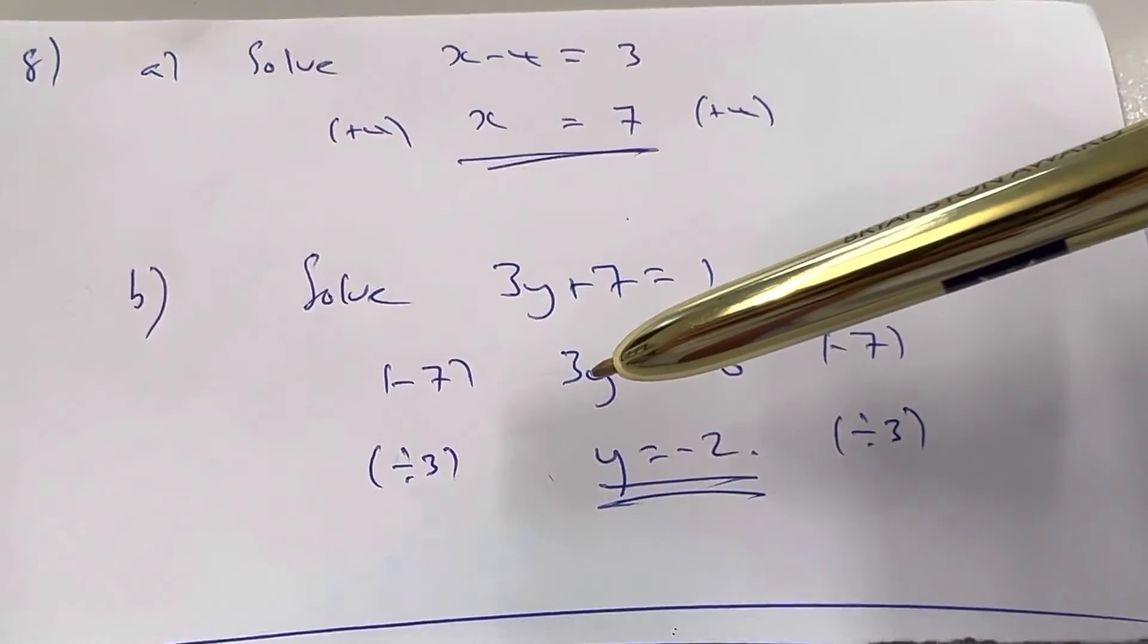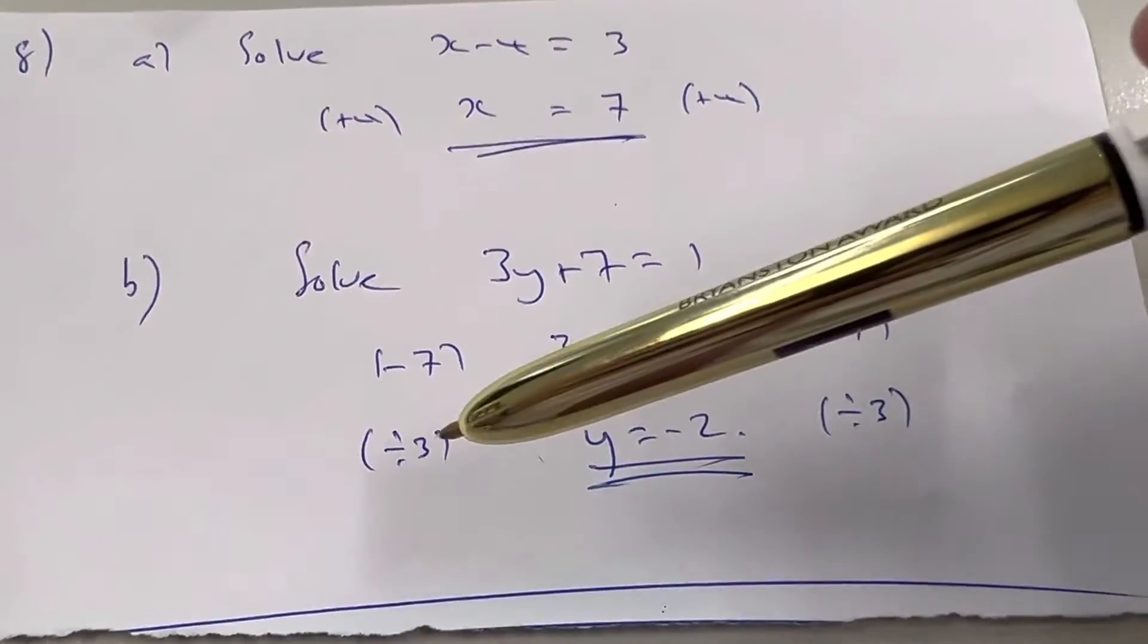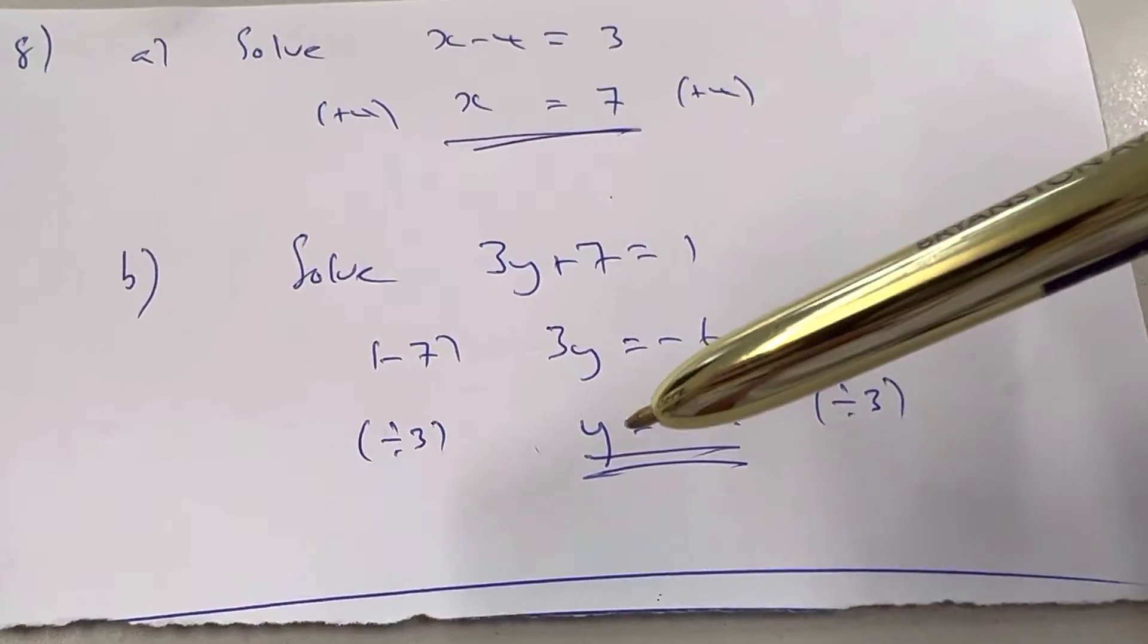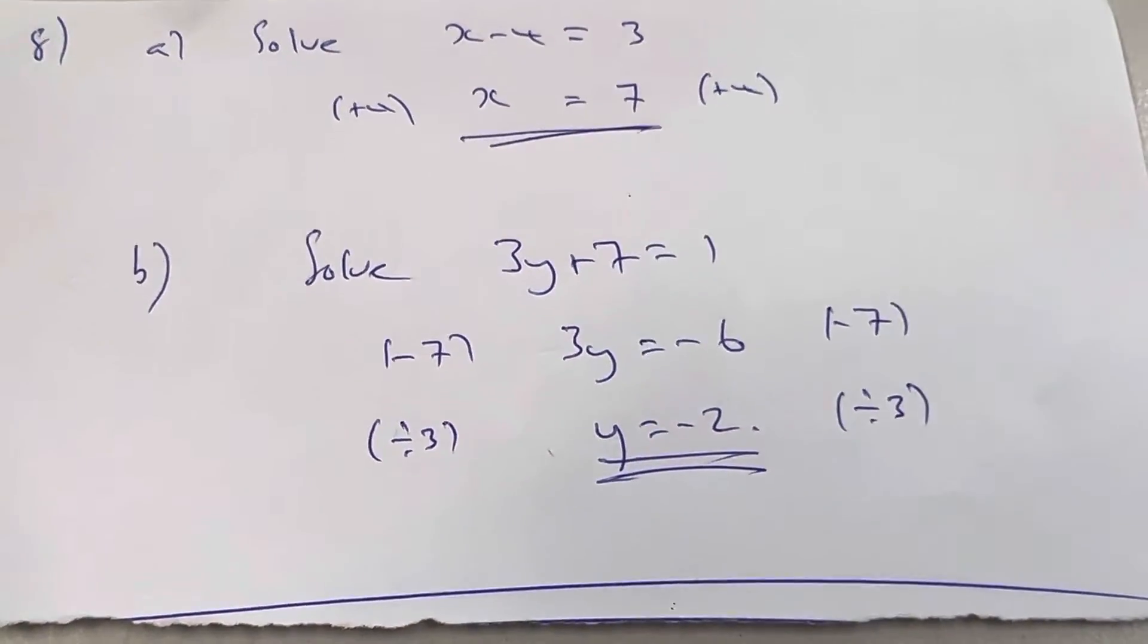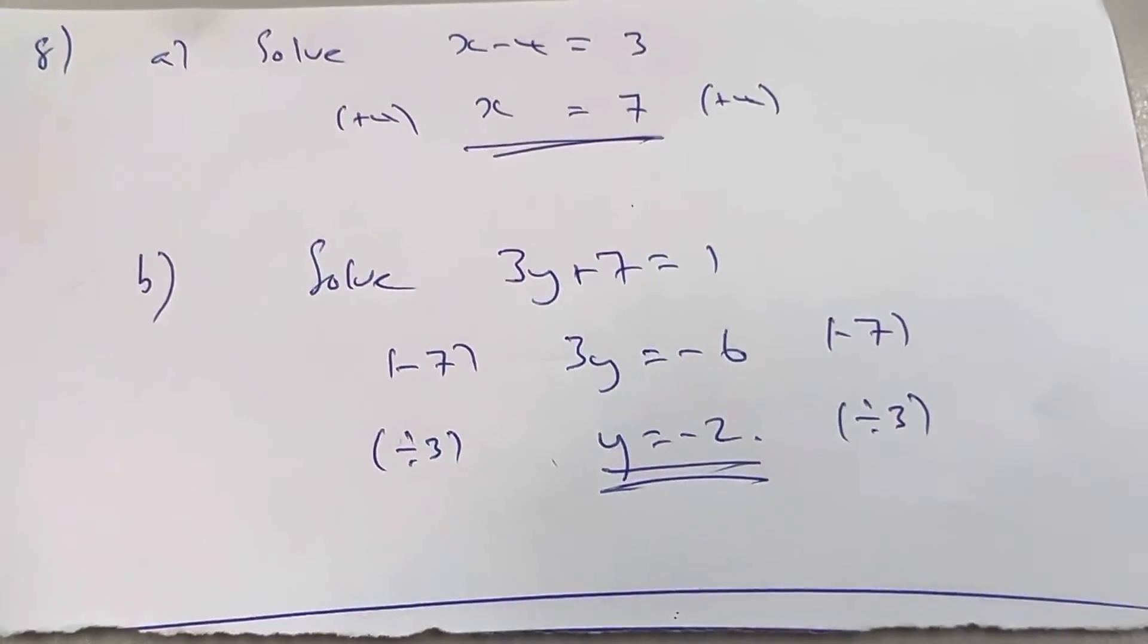Then you need to undo timesing 3 by dividing by 3, as I say, just on the sides here, look. And then final answer, y equals minus 2. That's all 8 questions done. Bonus question in class.